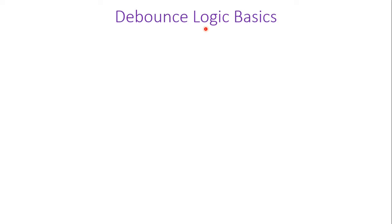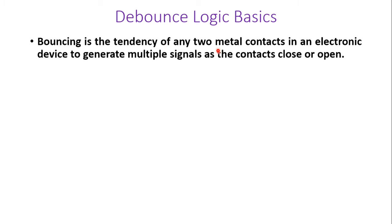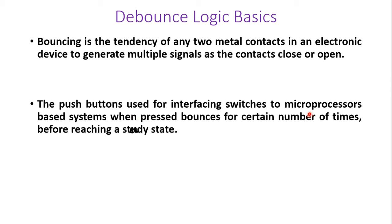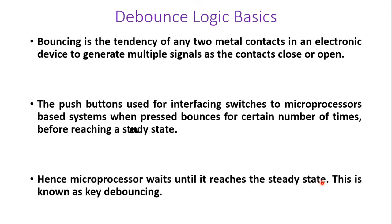Now let us understand some basics about debounce logic. Bouncing is the tendency of any two metal contacts in an electronic device to generate multiple signals as the contacts close or open. When a key transitions from 0 to 1 or 1 to 0, the output will not immediately reach 0 or 1 — it will exhibit transient behavior and only stabilize after some time. The push button used for interfacing switches to microprocessor-based systems bounces a certain number of times before reaching a steady state. Hence the microprocessor waits until it reaches steady state — this is known as key debouncing.